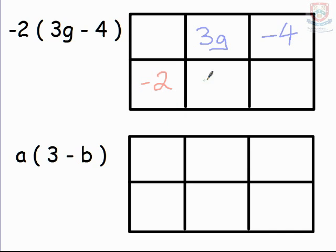So we have negative 2 times 3g. Well multiply your numbers together first. 2 times 3 is 6. So that must be a negative 6. And don't forget the g.